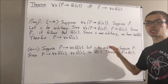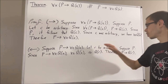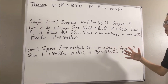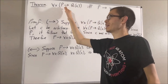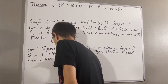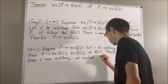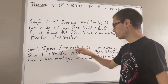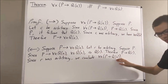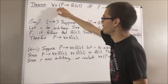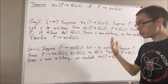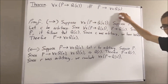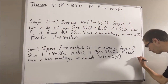But remember, r was arbitrary — we've shown that P implies Q of r no matter what r is. Therefore, we have shown for all x, P implies Q of x. So we see under the assumption P implies for all x, Q of x, we have for all x, P implies Q of x — completing the second direction. We've shown both directions of the if and only if, which means we have proven the entire statement. So this completes the proof.